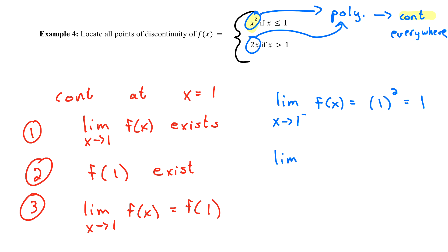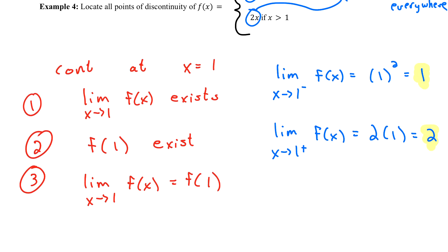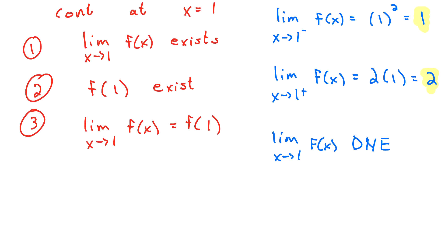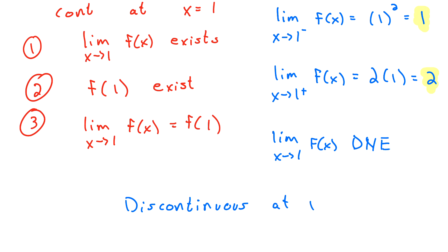For the right-hand limit as x approaches 1 from the right, I look at how the function is defined for values greater than 1, which is 2x. So I plug in 1: 2 times 1 gives me 2. The left-hand limit is 1 and the right-hand limit is 2 — they are not equal, so the limit as x approaches 1 of f(x) does not exist. I've failed property number 1, which means this function is discontinuous at x equals 1.